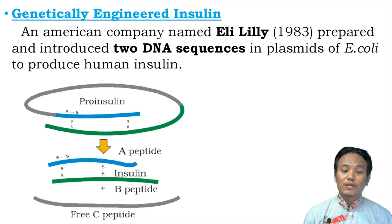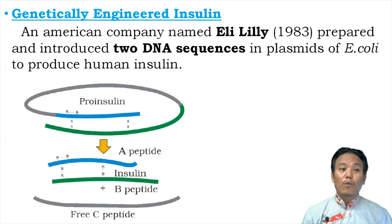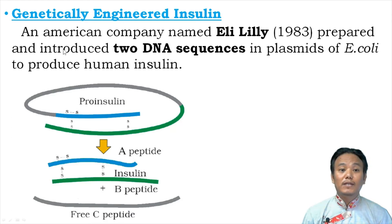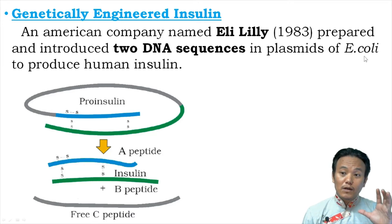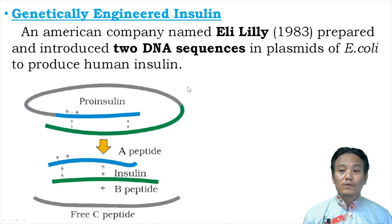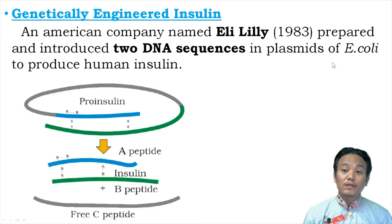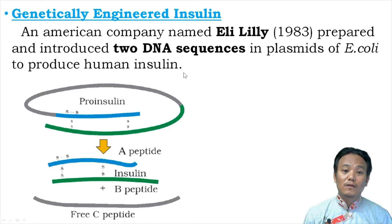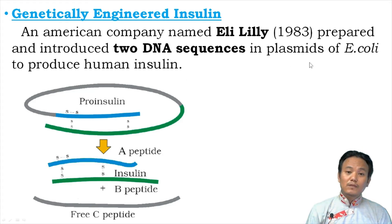To avoid allergic reactions, an American company called Eli Lilly in 1983 prepared and introduced two DNA sequences into the plasmids of E. coli, thereby making them produce human insulin. The E. coli, which now has plasmids with two human DNA sequences in it, starts producing human insulin, and this human insulin can be harvested from E. coli cultures in bioreactors.